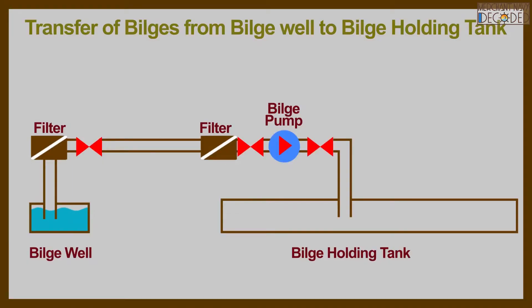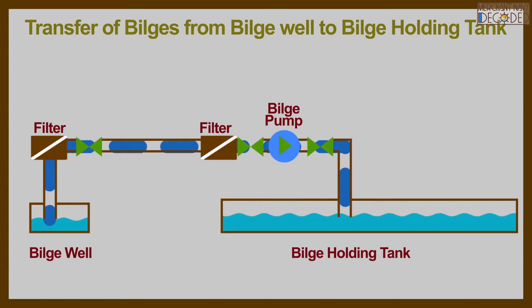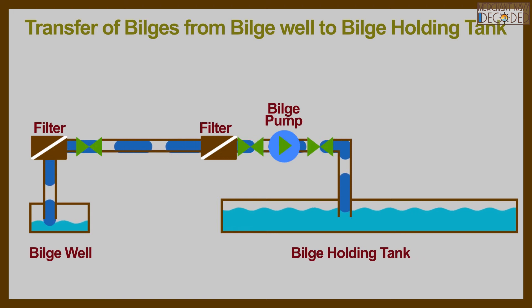7. When the bilge well is filled up, the bilges from the bilge well are transferred to a big tank called the bilge holding tank. As you can see in the diagram, the bilge pump is running and via two filters, the bilges from the bilge well are being transferred to the bilge holding tank.